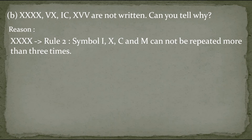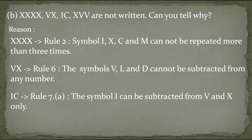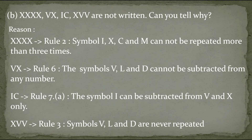The second one is VX. We didn't write VX because of rule number 6, which says that V, L and D cannot be subtracted from any number. Since V is written to the left of X — a higher value — it should be subtracted, but rule 6 prohibits this, so VX is wrong. Next is IC — we didn't use IC because of rule number 7, which says I can be subtracted only from V and X. Here I is being subtracted from C, so this is also wrong.